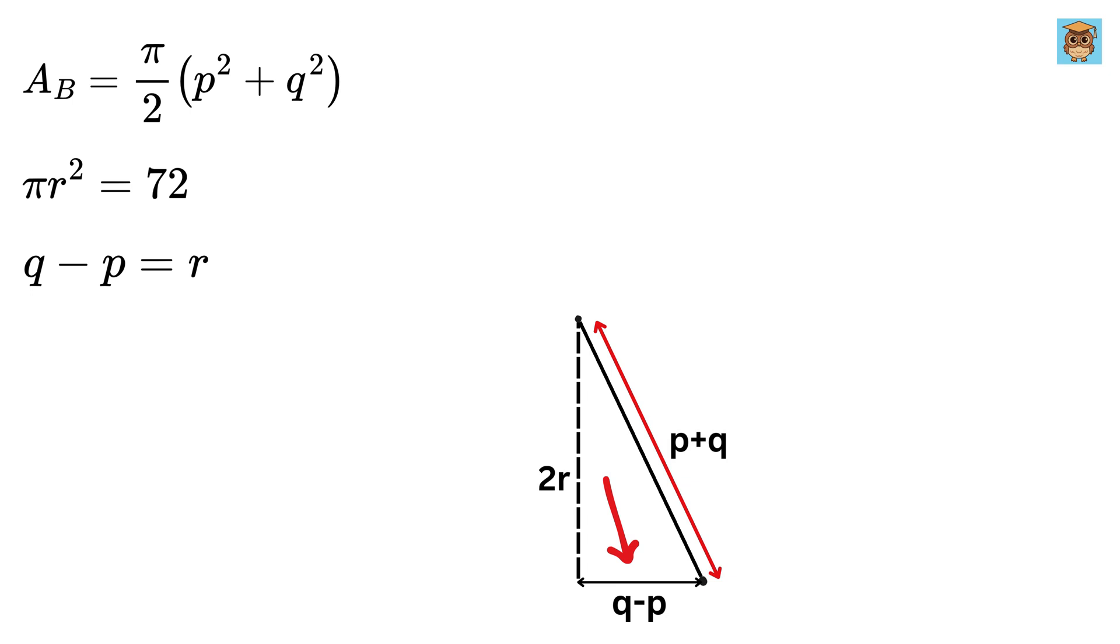And now, we will be using our favorite theorem, which is, yes, you guessed it right, it's Pythagoras theorem. We get (P + Q)² equals (2R)² plus (Q - P)².